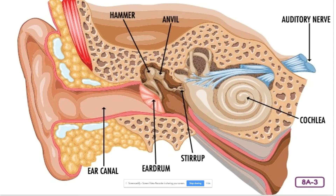At the end of the ear canal, sound bounces off a thin, flexible flap of skin that stretches across the end of this tunnel. This membrane, or thin skin flap, is called an eardrum, because sound vibrates off it in the same way that sound vibrates off the top of a drum when it is pounded with a drumstick. Your eardrum separates your outer ear from your middle ear.